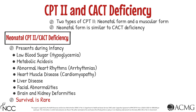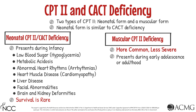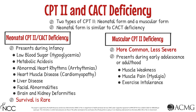The muscular form is much more common and less severe than the neonatal form of CPT2. The muscular form presents during early adolescence or adulthood. Symptoms of this form include muscle weakness and muscle pain or myalgia, exercise intolerance, and the breakdown of muscle tissue or rhabdomyolysis.